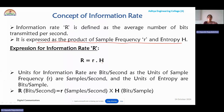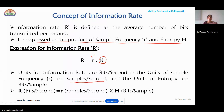We know how to calculate the entropy. And once we know the sampling frequency, the sampling frequency multiplied by entropy gives you the information rate. The units for sampling frequency are samples per second, and the units of entropy are bits per sample, leading to information rate units of bits per second.